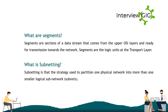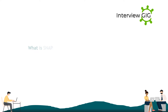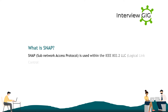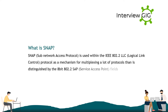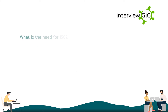What is SNAP? SNAP, Subnetwork Access Protocol, is used within the IEEE 802.2 LLC Logical Link Control protocol as a mechanism for multiplexing many protocols, distinguished by the 8-bit 802.2 SAP (Service Access Point) fields.